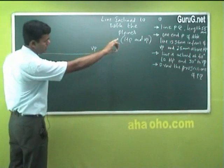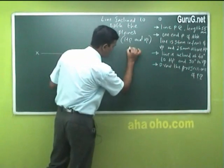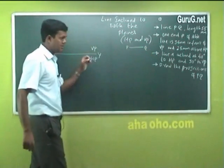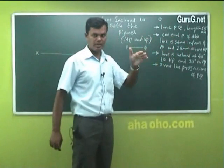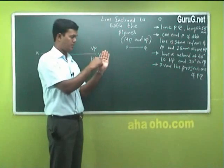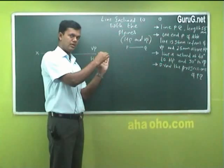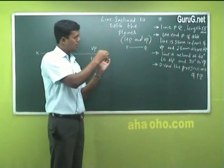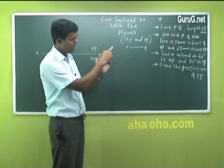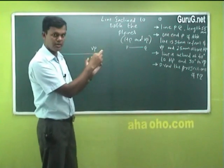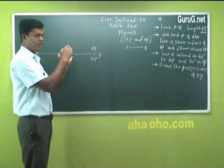First, line PQ length is 55 millimeters; one end P is 35 millimeters in front of VP. The point P — it says the line is 35 millimeters in front of VP, and the same point P is 25 millimeters above HP. 35 millimeters in front of VP will be shown below the XY line, and 25 millimeters above HP is directly above.